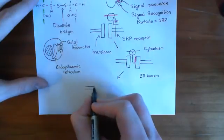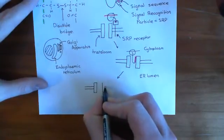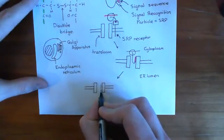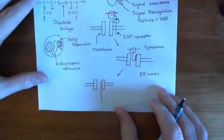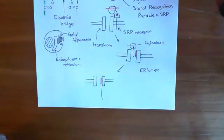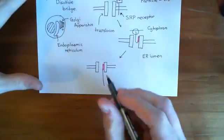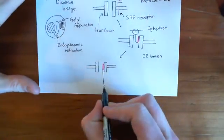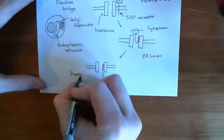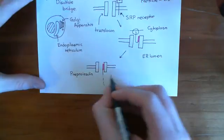Here is the lipid bilayer of the ER membrane and here is the translocon. You have the signal sequence still bound to the translocon, and then the rest of the polypeptide is now in the ER lumen. The signal sequence is currently still bound to the translocon, and the rest of the polypeptide will now fold up. The whole thing — the signal sequence with the rest of the polypeptide — is what is now called pre-proinsulin.